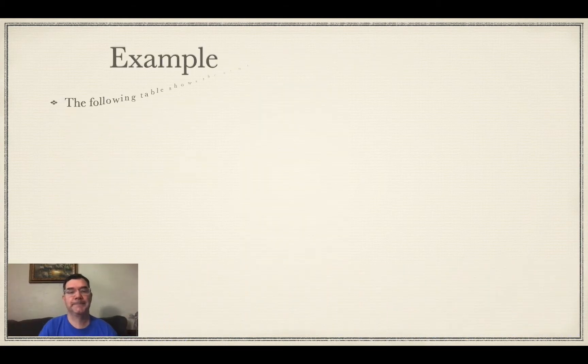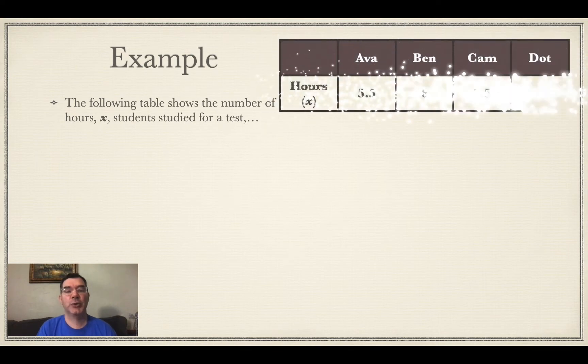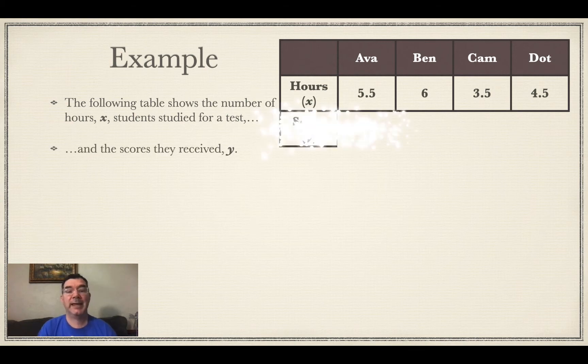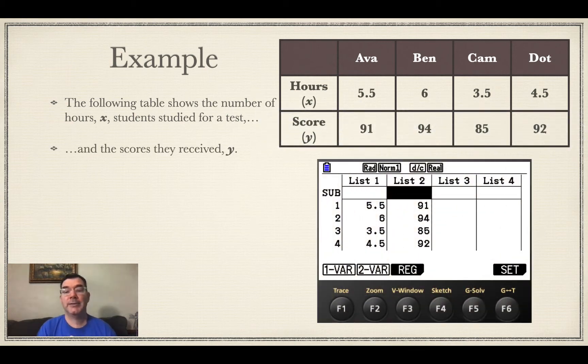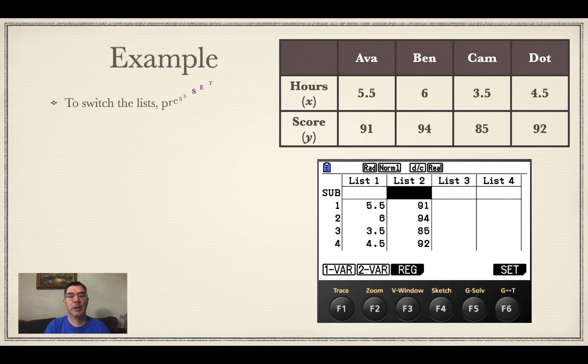Alright, so here's an example of how to do that. The following table shows the number of hours X that a student studied for a test and the scores that they received out of a hundred. So I put that data in and notice how the X's do go in list 1 and the Y's go in list 2.